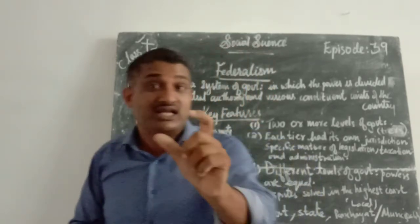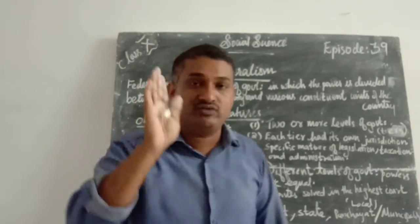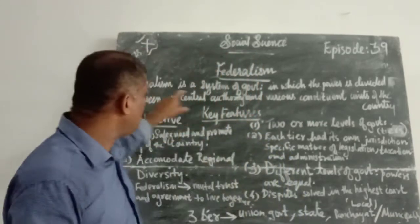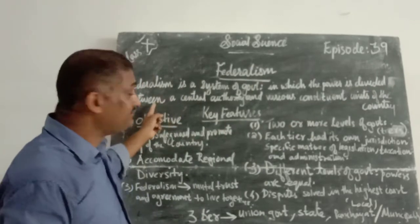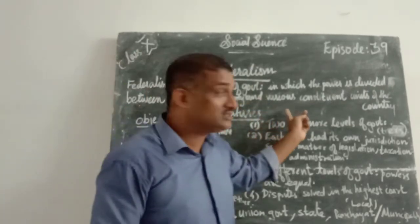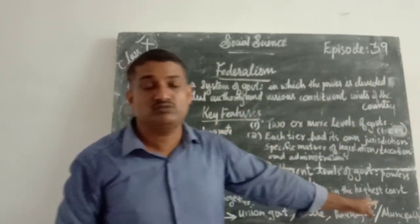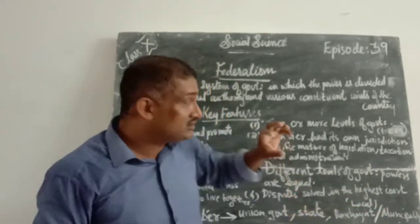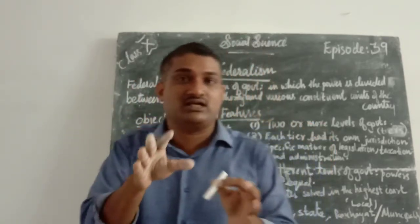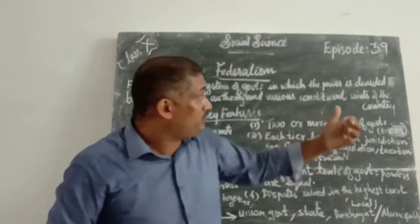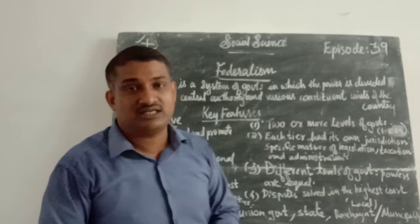What form of government exists in India? Federal system of government or federal form of government. Federalism is a system of government in which the power is divided or shared between a central authority and various constituent units of the country — even states, even panchayat, local. The power will be shared. It means the central government does not hold all powers. Power will be divided among the various constituent units of the country — that is called federalism.